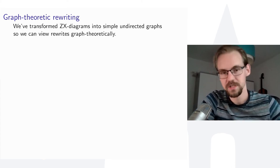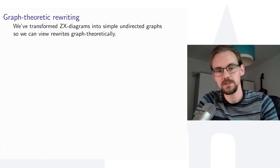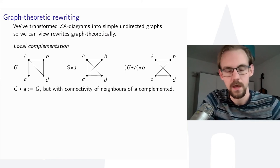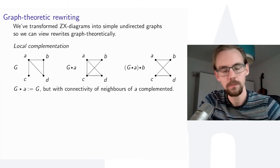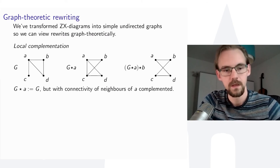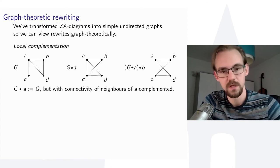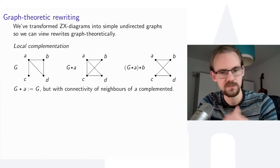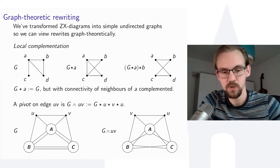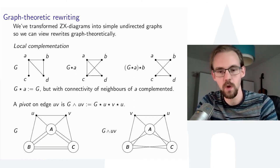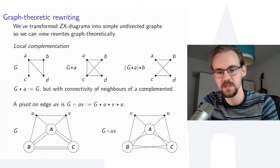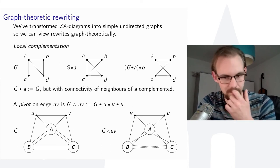Because we've transformed ZX diagrams into graphs, rewrites can be viewed graph-theoretically. A key operation is local complementation: given a graph and a vertex A, we toggle the connectivity among all neighbors of A. A pivot is a sequence of three local complementations on a connected pair of vertices U and V — it swaps U and V and toggles connectivity between their exclusive neighborhoods and their joint neighborhood. Crucially, both operations are implementable on graph states using local Clifford operations: an X-rotation on the target vertex and S-gates on all its neighbors for local complementation.